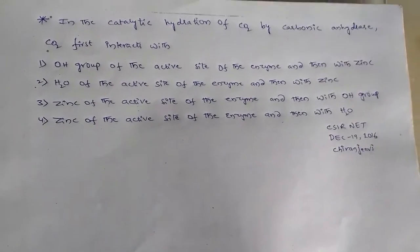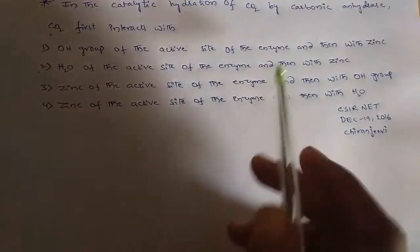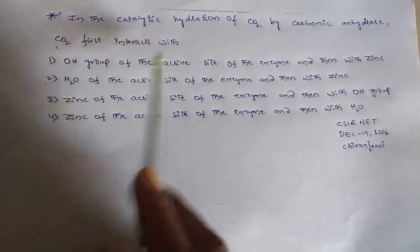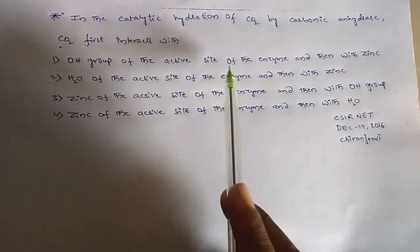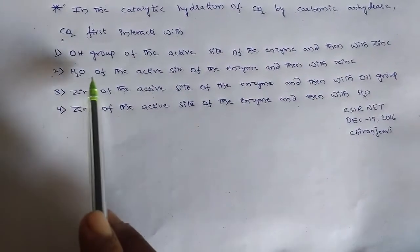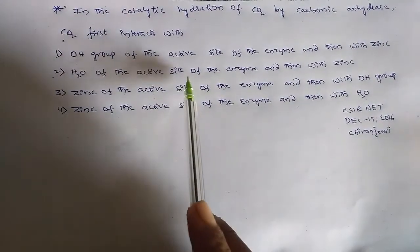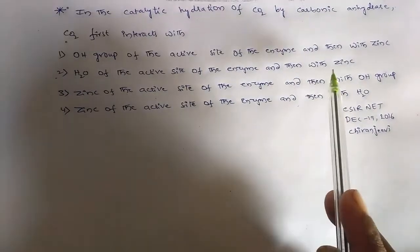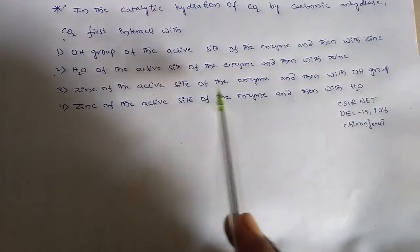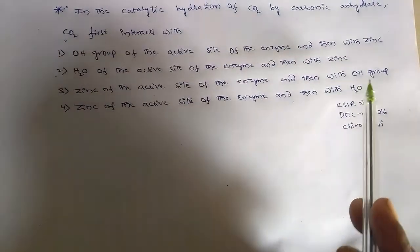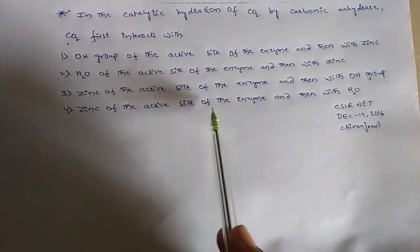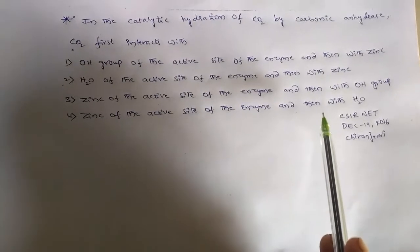In the catalytic hydration of carbon dioxide by carbonic anhydrase, carbon dioxide first interacts with: Option 1 - the OH group of the active site of the enzyme and then with zinc. Option 2 - H₂O of the active site of the enzyme and then with zinc. Option 3 - zinc of the active site of the enzyme and then with OH group. Option 4 - zinc of the active site of the enzyme and then with H₂O.